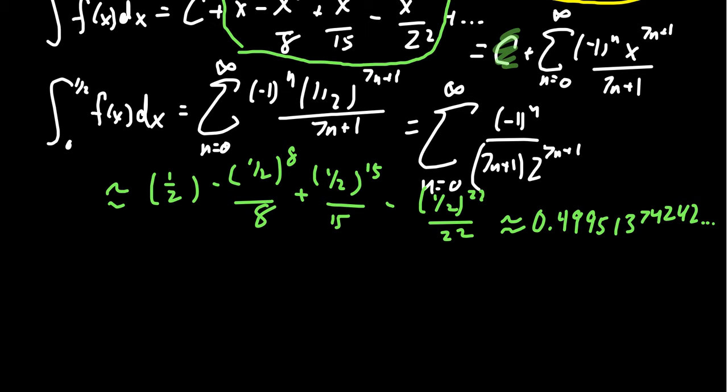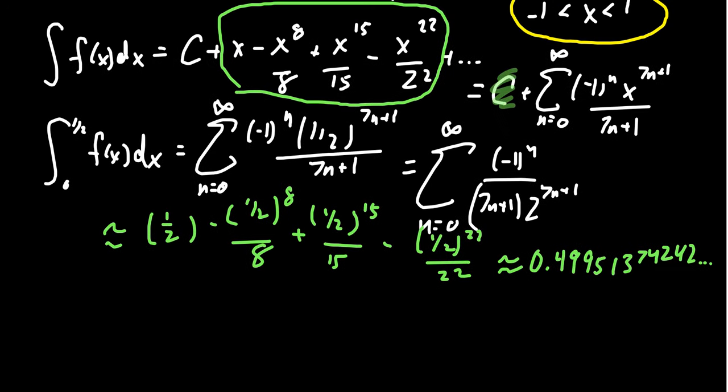How good of an estimate is this? Well, since it's an alternating series, notice this is the n equals zero term, this is the n equals one term, this is the n equals two term, this is the n equals three term. If we look at the next term in the sequence, how big is that term? The next term would look like a positive x to the 29th power over 29. But of course, we're not using x here, we're using one half. So we get two to the 29th. How big is that number? Because this gives us an error bound. The error is going to be bounded above by the next term in the alternating sequence.